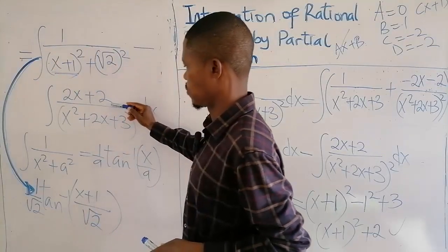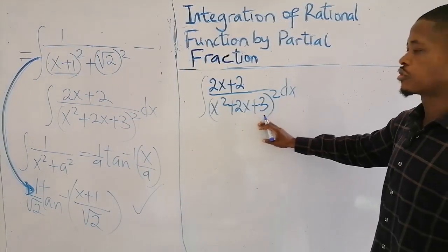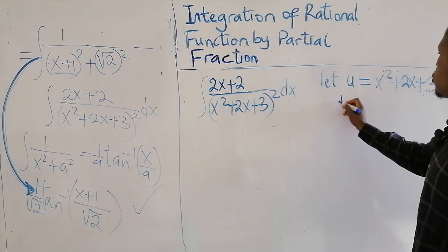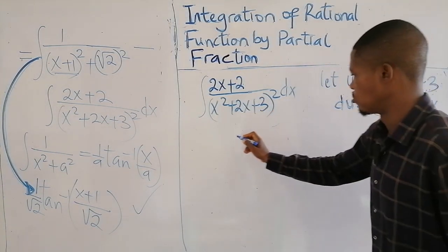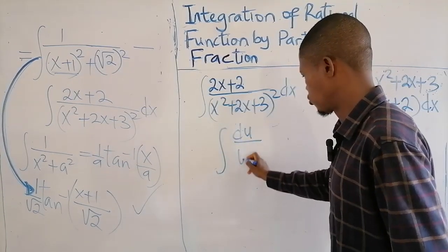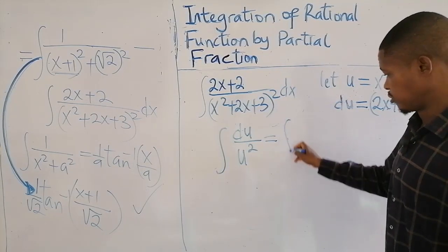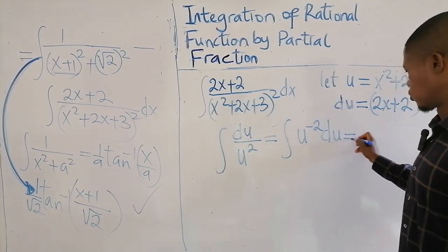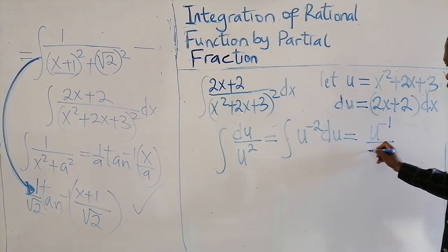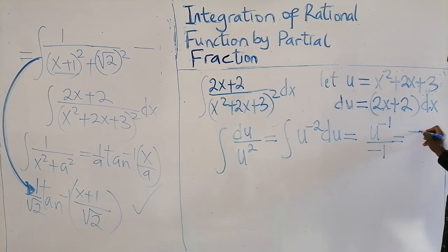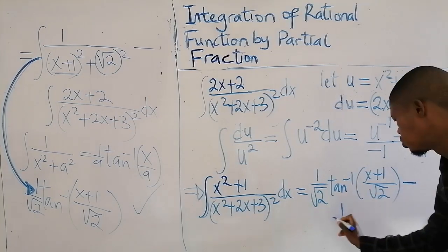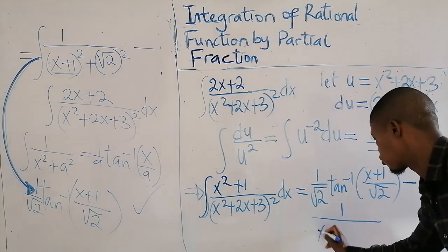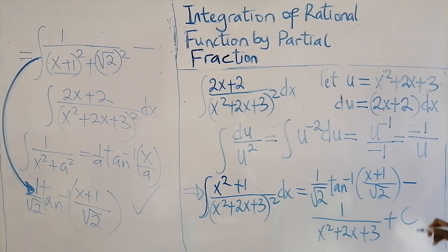For the second integral, I'll use a substitution. Let u = x² + 2x + 3, so du = (2x + 2)dx. The integral becomes the integral of u to the power minus 2, du. That equals u to the power minus 1, all over minus 1, which gives minus 1 over u. Substituting back, that's minus 1 over (x² + 2x + 3). The final answer combines both parts, plus the constant of integration.